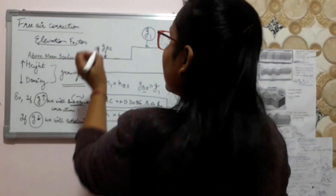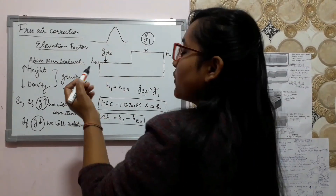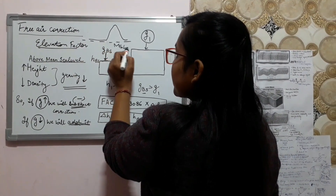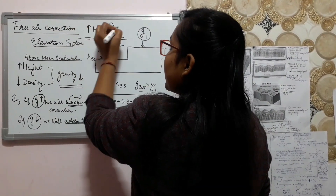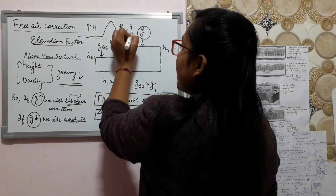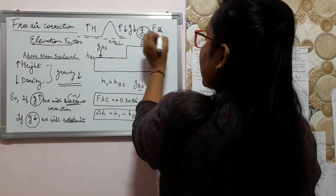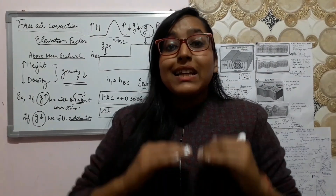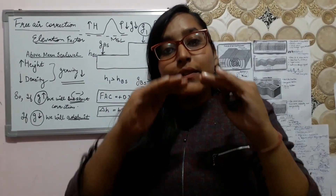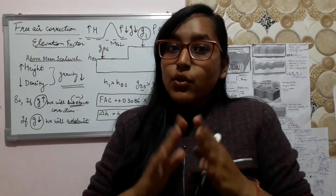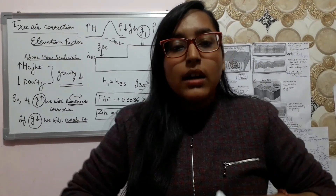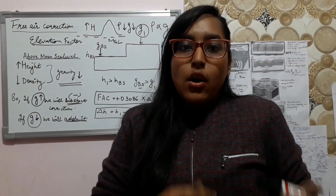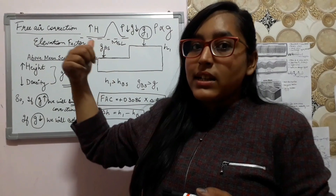What is the elevation factor? This is a mountain and we take a reference at mean sea level. So with increasing height, density will decrease and gravity will also decrease because density has a direct relationship with gravity. This is the basic principle for free air correction — that with increasing height, density will decrease and gravity will also decrease, causing an anomaly over that area. If we are measuring some underground ore bodies or rocks below the underground surface, we have to remove this anomaly by using the free air correction factor.